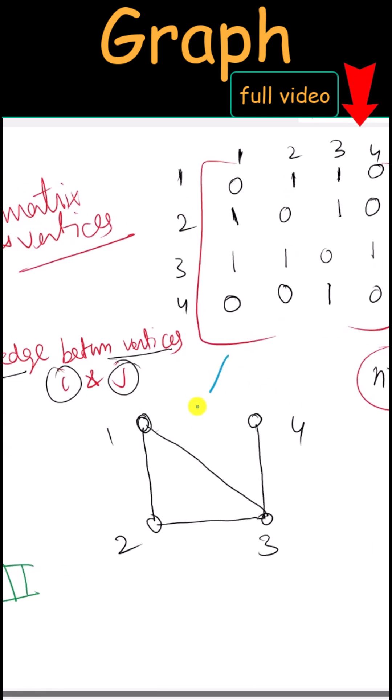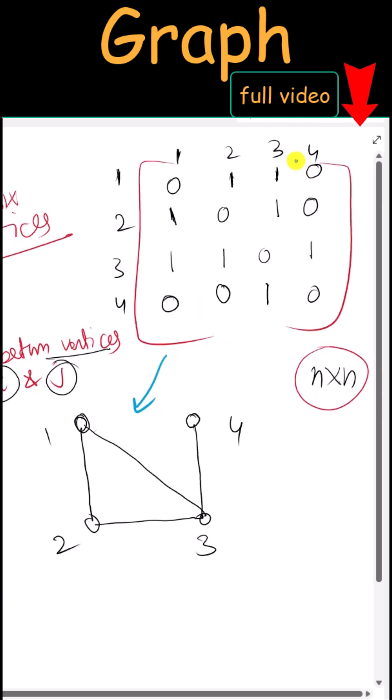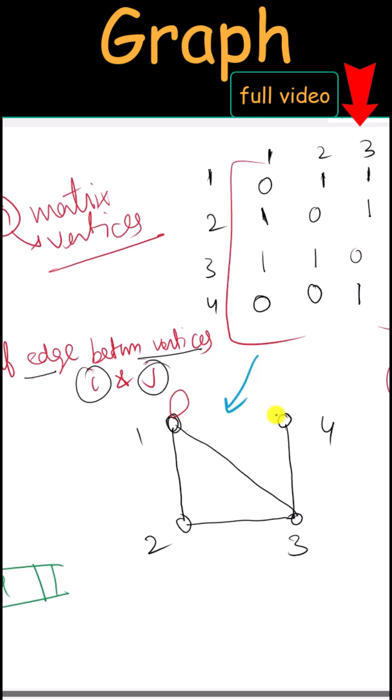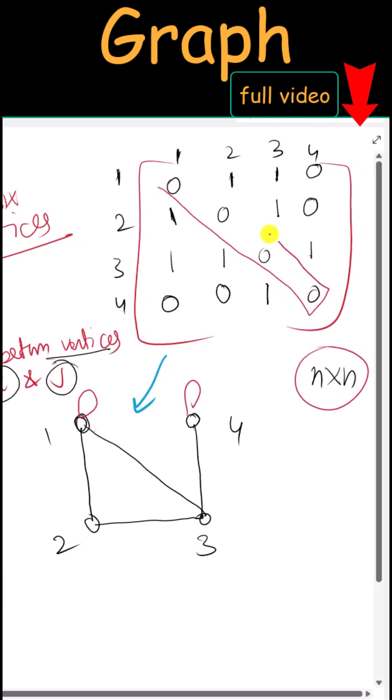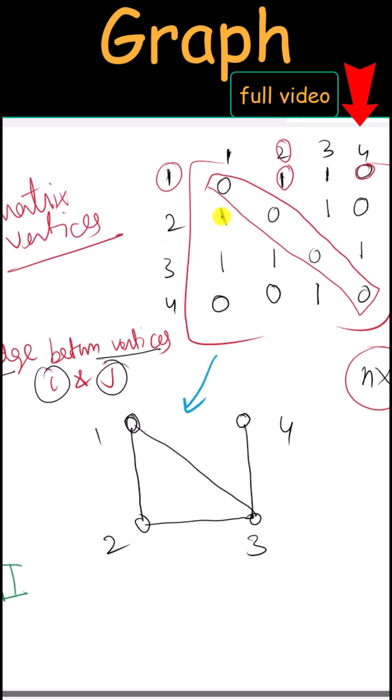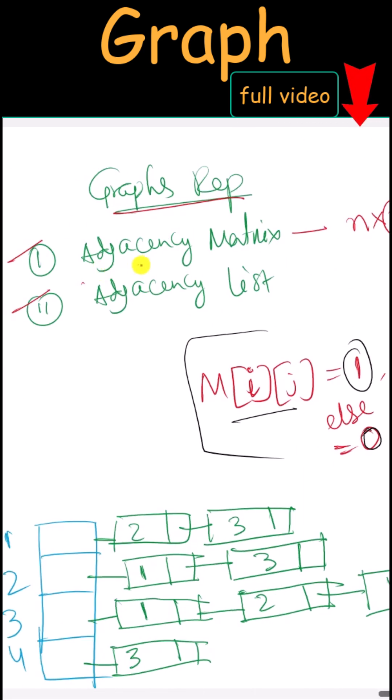Because the graph has 4 vertices, this is a 4 by 4 matrix. Since there are no self-loops, the diagonal values are all 0. If we have an edge between two vertices, we fill that position with 1, otherwise with 0. This is how we represent a graph using an adjacency matrix.